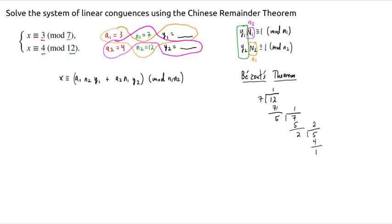This here says that 1, I'm going to write this down over here. So 1 is equal to 5 minus 2 times 2. What the division algorithm says is that 5 is equal to 2 times 2 plus 1.